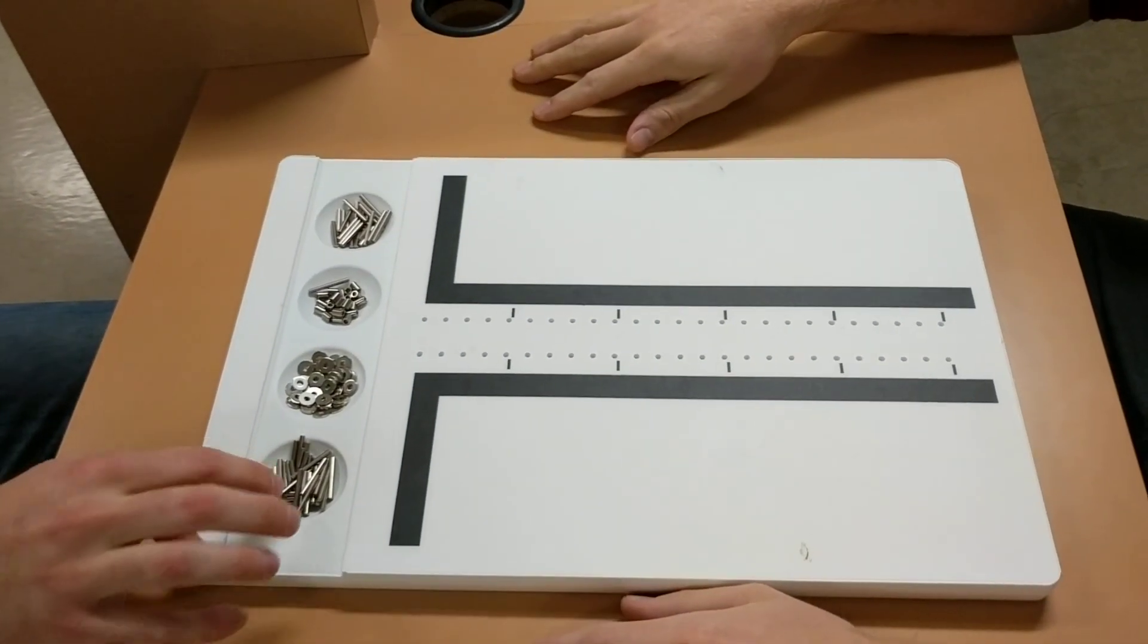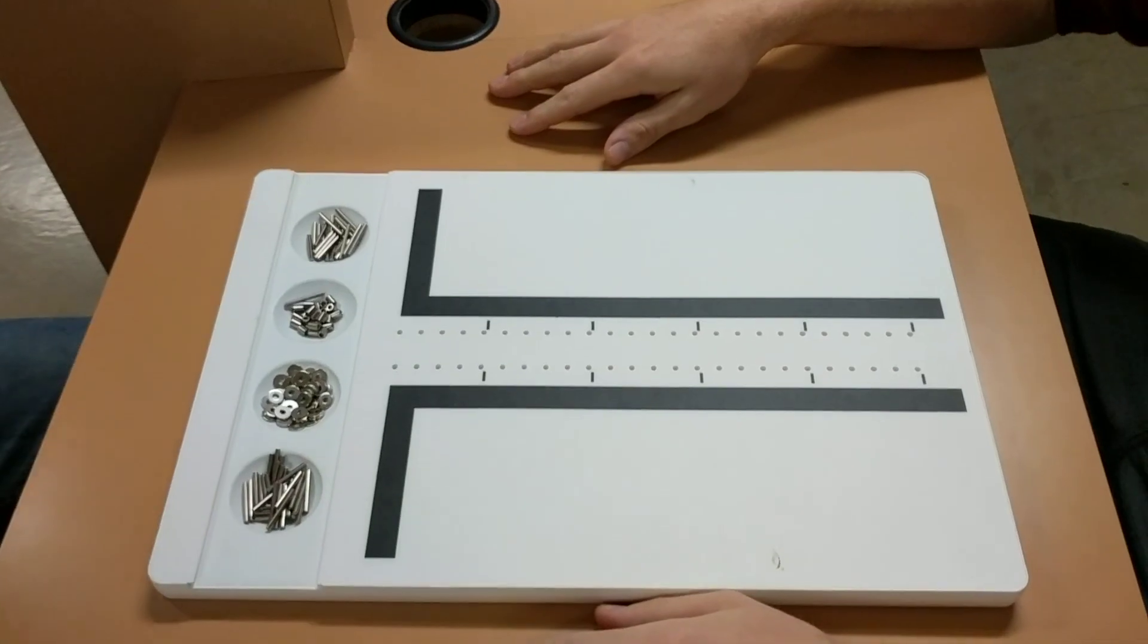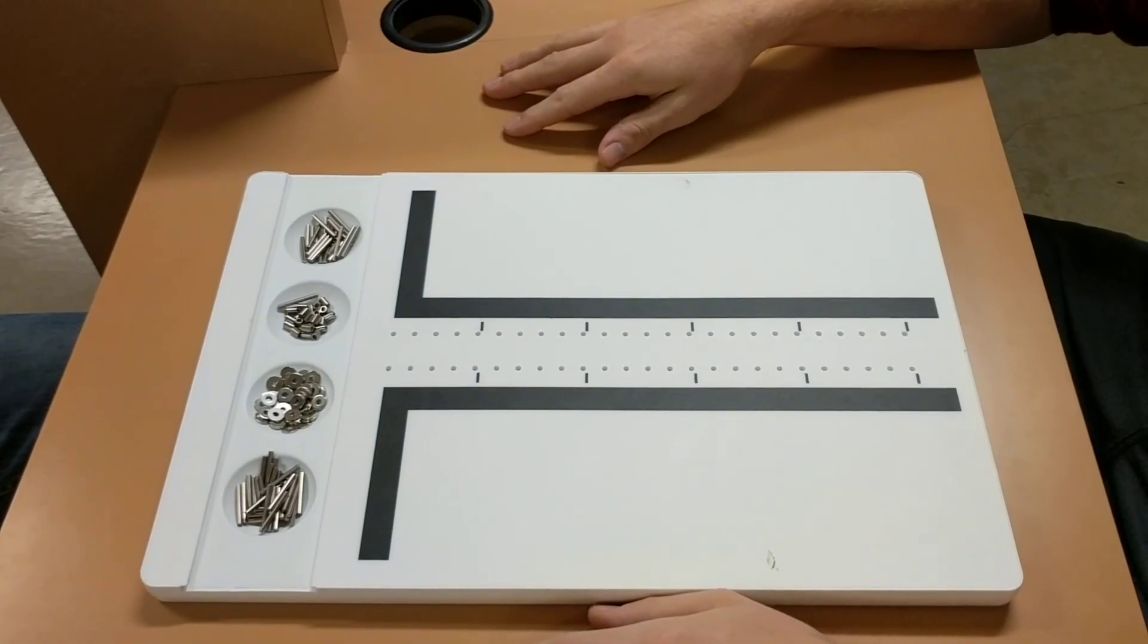Alright, now we're going to do the same thing with your left side. You're going to take from this cup and put them down this row, and you also have 30 seconds. You can start now.